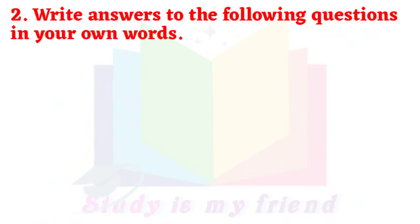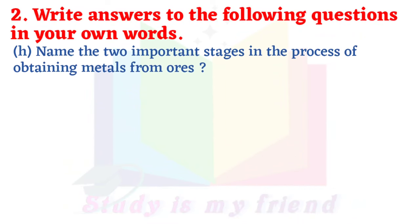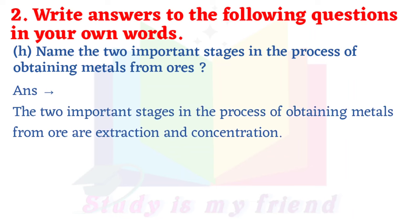Question 6: Name the two important stages in the process of obtaining metals from ores. The two important stages in the process of obtaining metals from ores are extraction and concentration.